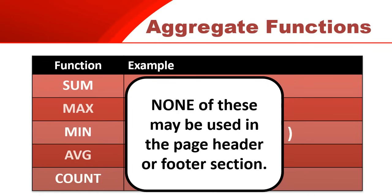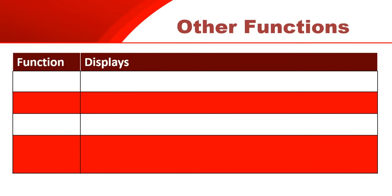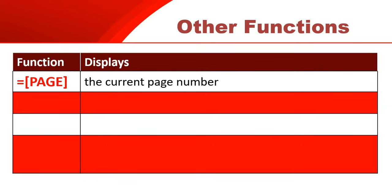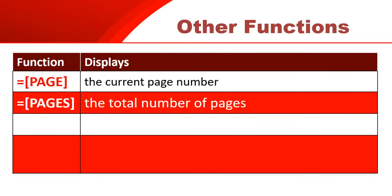If you do want to put a formula in the page header or page footer, these are the ones you would probably use. For example, maybe you want to put the current page number — you can say equals [Page], and that will get you the current page number, like page one or page two. Maybe you want the total number of pages, so you use [Pages], which tells you there are eight pages in this document. A nice combination would be equals [Page] & " of " & [Pages], which gives you 'page one of eight', for example.